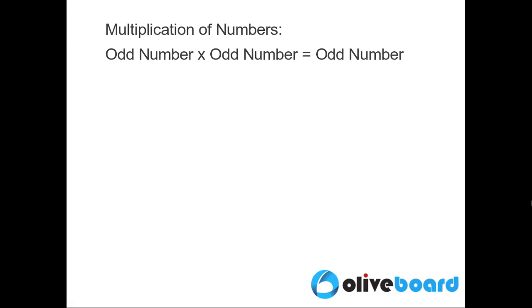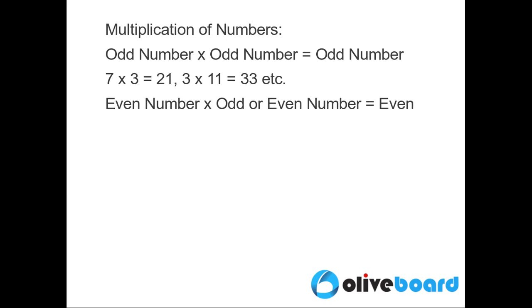Multiplication of numbers. If we multiply an odd number by another odd number, the resultant number is also odd. For example, 7 x 3 is 21, 3 x 11 is 33 and so on.